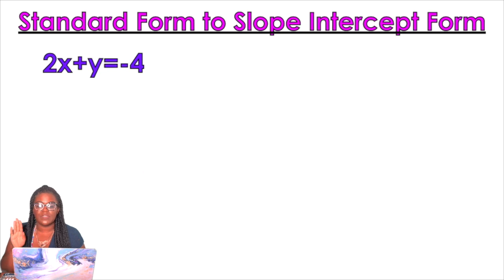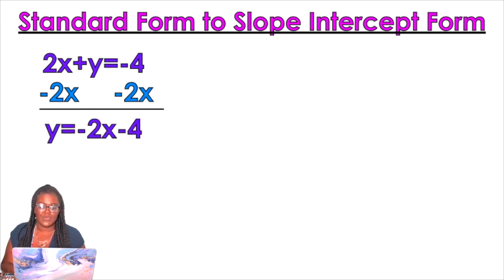Okay, so standard form to slope-intercept form. So again, you want to isolate y. That means we gotta get rid of that x term. And so minus 2x minus 2x, that's gonna give me y equals negative 2x minus 4.